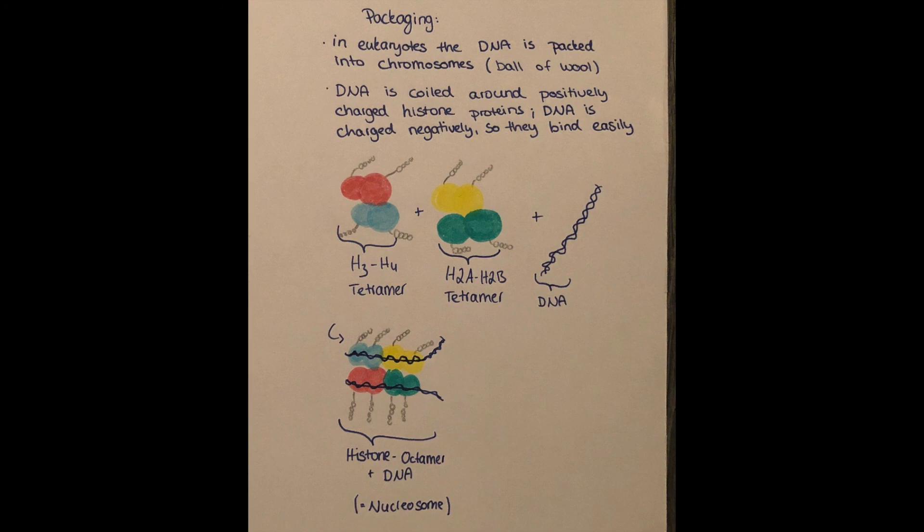And then the DNA can wrap around this. This octamer together with the DNA is called a nucleosome. And the nucleosome then again is wrapped around itself and is coiled up to build the chromosomes. But that's material for the next video.